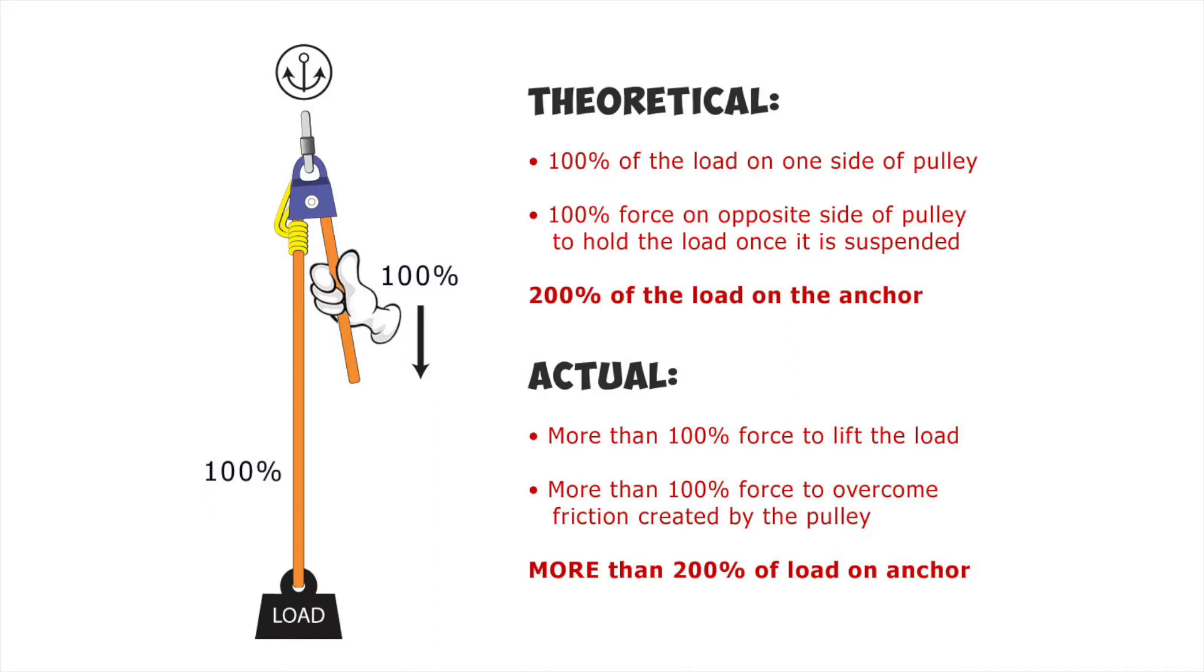For the purpose of this discussion and easy math for me, let's assume the load weighs 100 pounds. There are two strands of rope, one on each side of the pulley, that are each holding 100 pounds. There is a 100 pound static weight hanging on the left side of the pulley, and I must generate 100 pounds of force on the right side of the pulley to hold the load. The sum of the tension on the two ropes is 200 pounds, so 200% of the load is on the anchor.